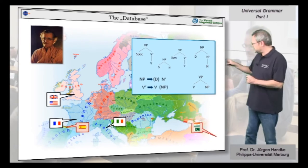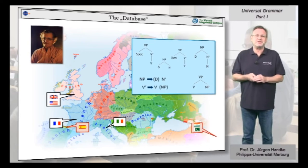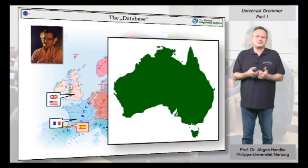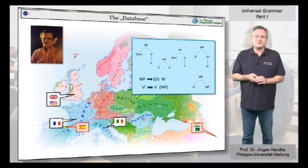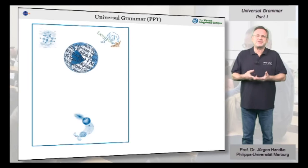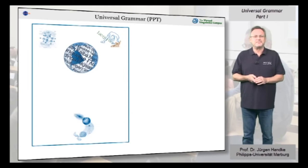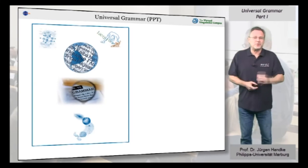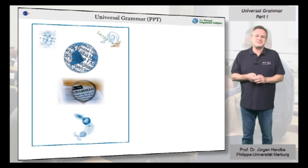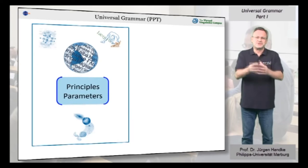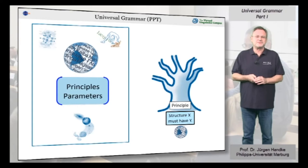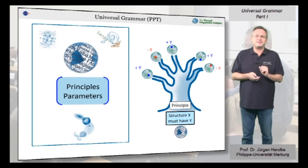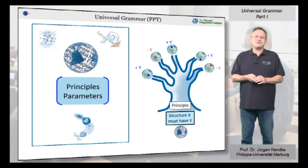Ergative languages such as Basque and Urdu use sentence subjects in a way that is unlike many European languages. Additionally, native Australian languages such as Warlpiri scatter noun and verb phrases throughout the sentence. These outliers were difficult to reconcile with the universal grammar approach and led to a wholesale revision of the theory in the 1980s. Rather than a single universal grammar for all the world's languages, the new version sought to identify universal principles — such as 'any structure X must have property Y' — plus parameters that govern the structure of individual languages. These principles manifested differently in each language and interacted with culture to produce today's parametric variations.